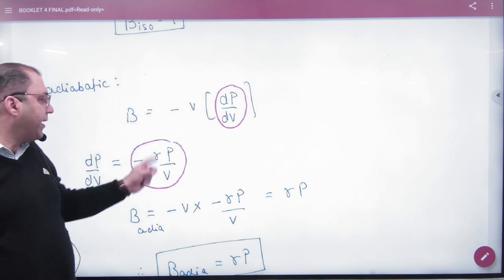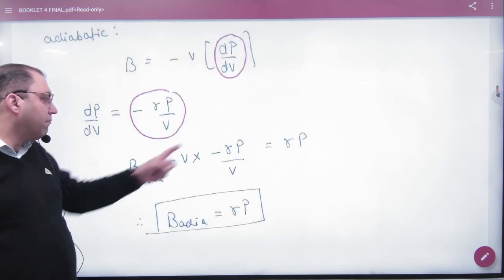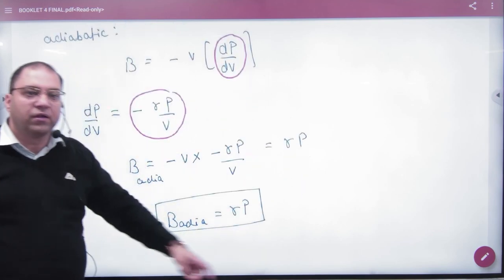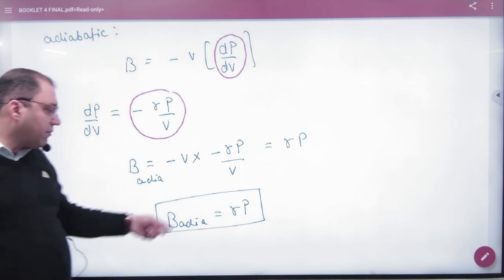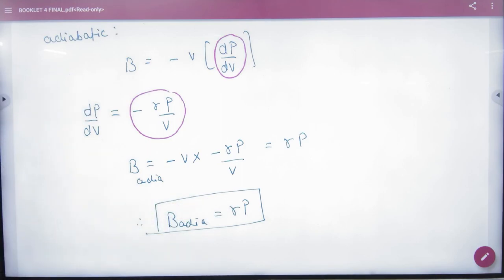Dp by dv slope is equal to minus gamma p by v. Put it. Minus is minus v. Cancel answer gamma into p. So, result will be. Adiabatic bulk modulus is equal to gamma into p.